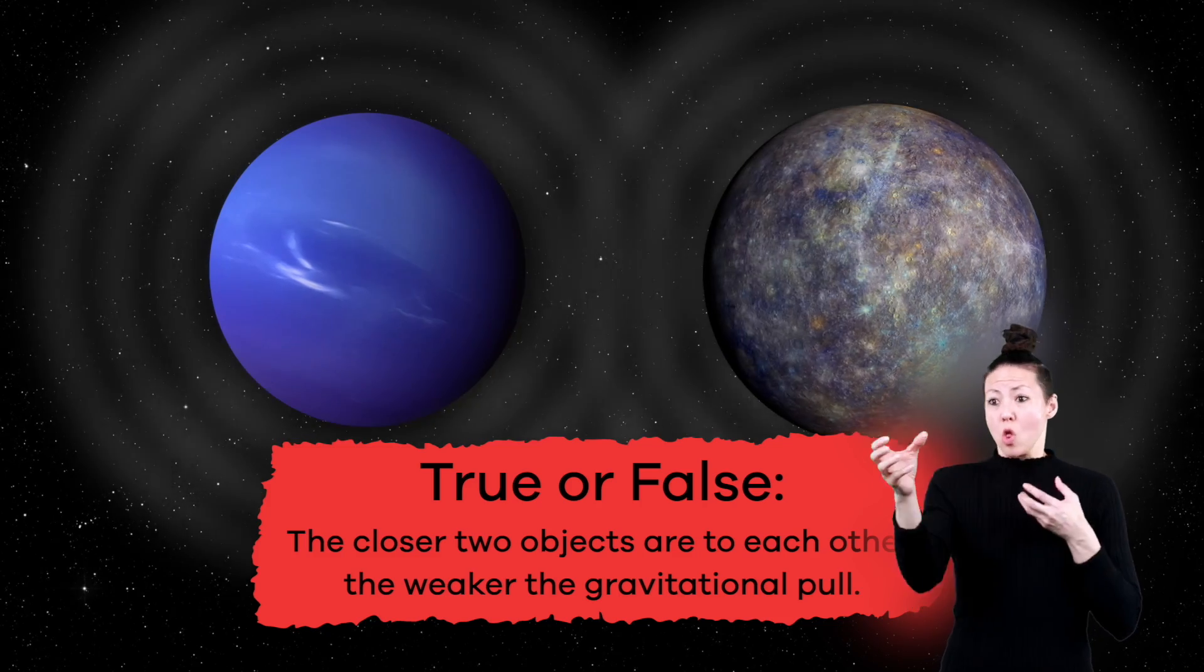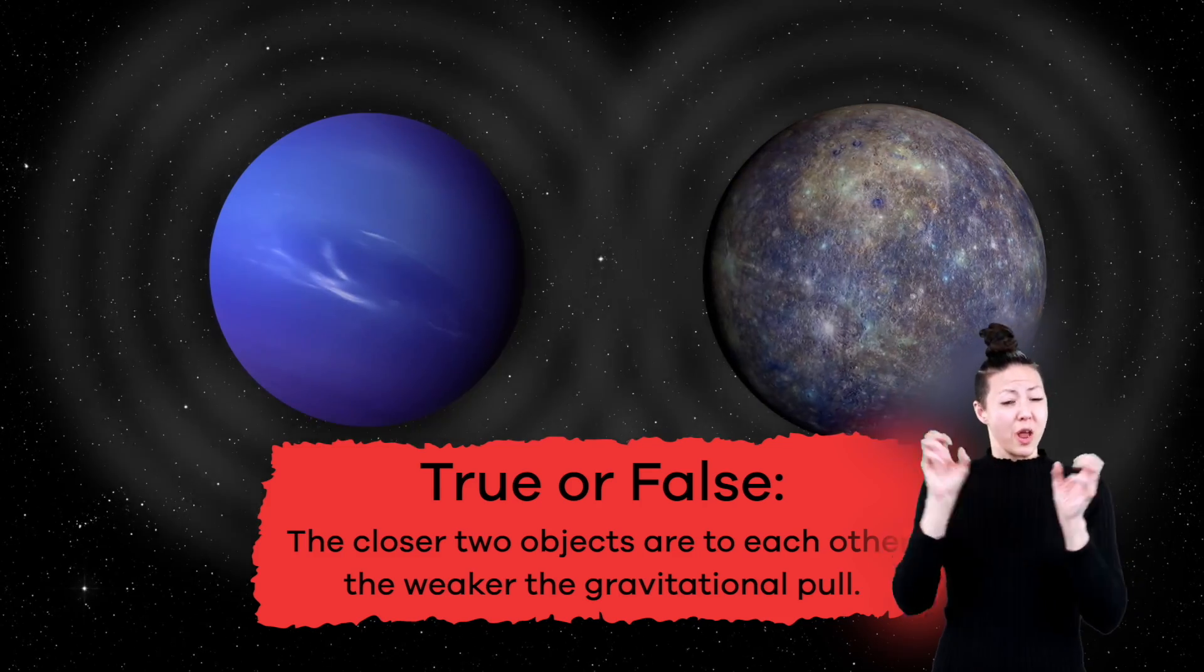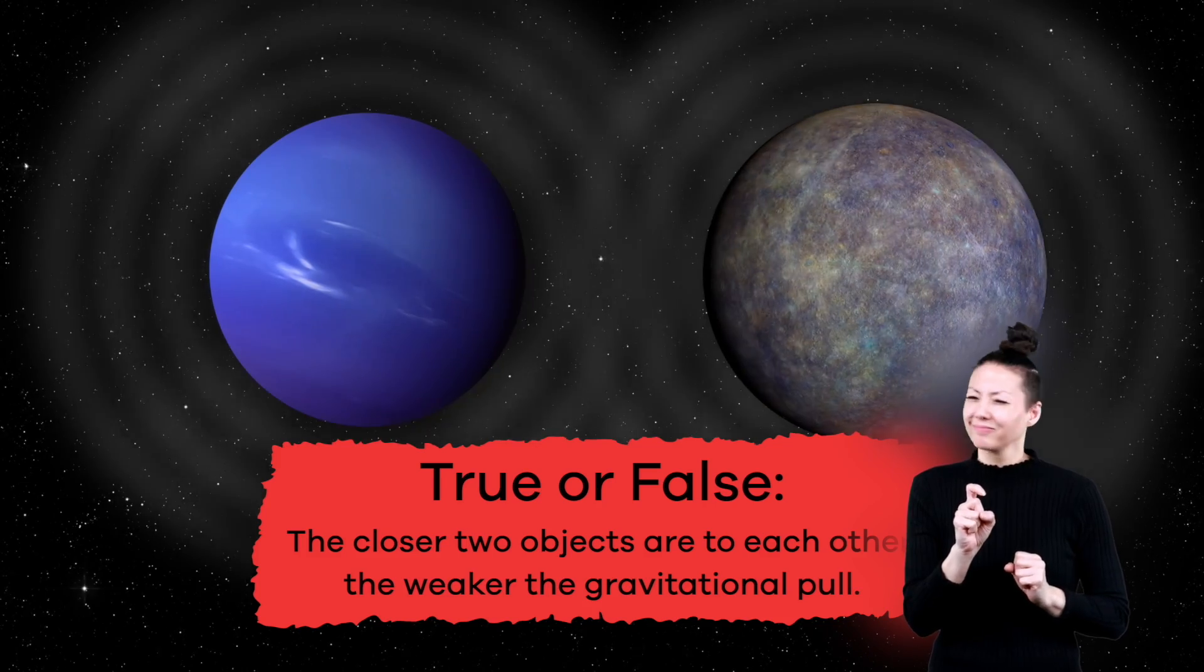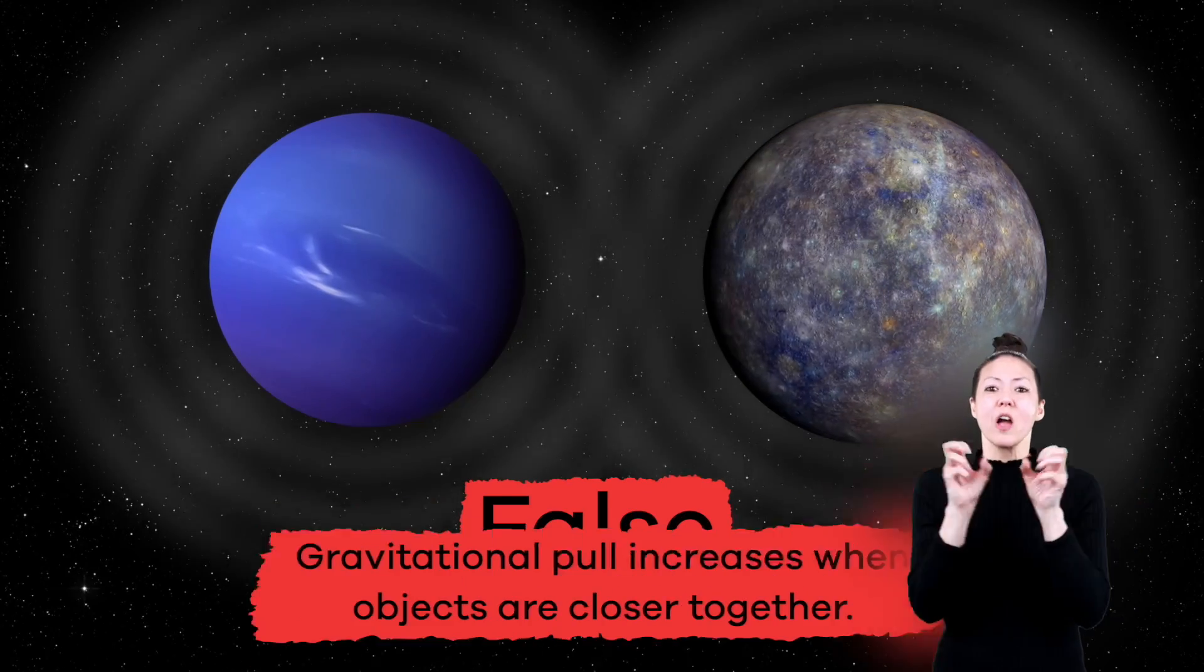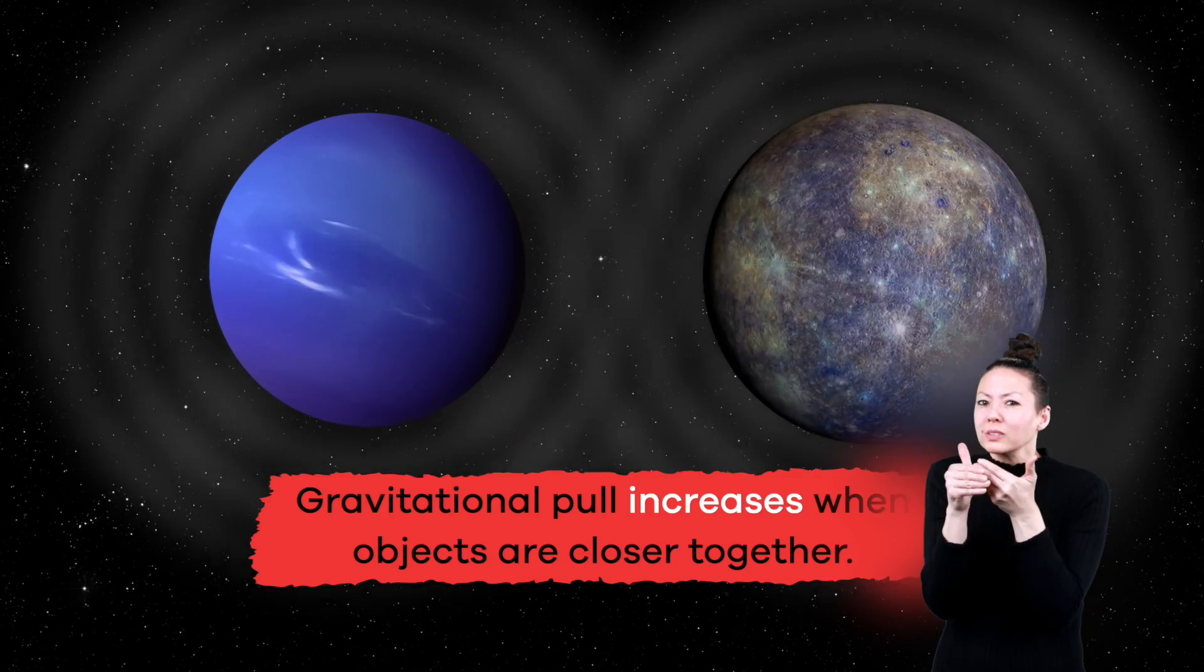True or false? The closer two objects are to each other, the weaker the gravitational pull. False. Gravitational pull increases when objects are closer together.